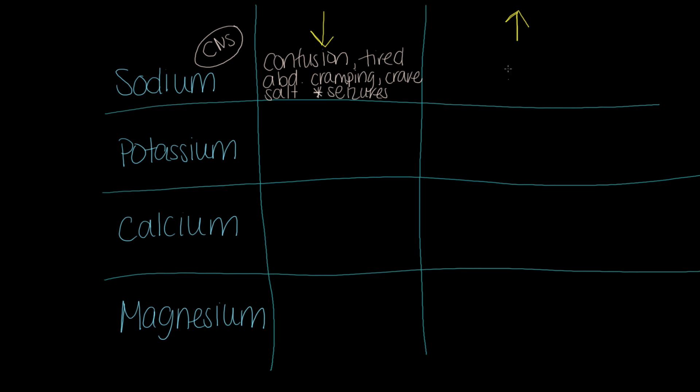Now, on the other side, when we talk about hyper, sometimes it's going to be a direct opposite, and sometimes it's going to be a new symptom. In hypo, we crave salt. Well, in hyper, we might see that this person is craving water. Other things we'll notice is some weakness, and then the big deal would be convulsions, decreased LOC. So seizures as well.